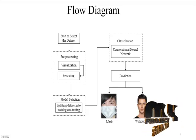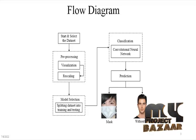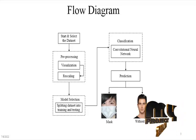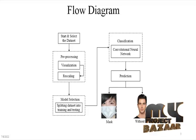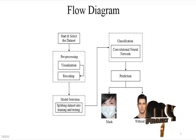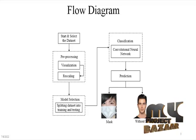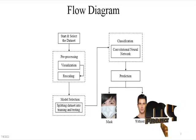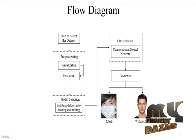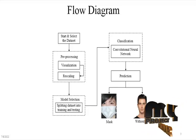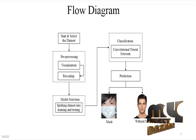First, we select and read the dataset, which contains mask and without-mask face images, and implement it into pre-processing. In pre-processing, we visualize sample images of the mask and without-mask categories, check the minimum and maximum height and width for every image, read all images, rescale them, and convert them into arrays. After converting to arrays, we split the data into training dataset and testing dataset.